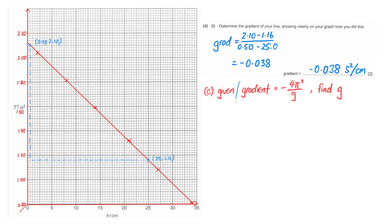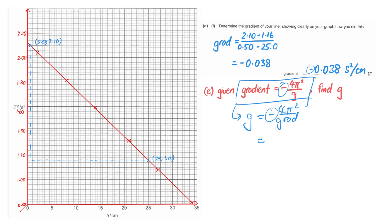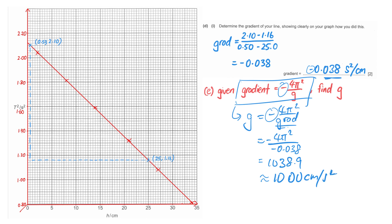Once again, an equation may be given to you — you may or may not understand it, but just follow the instructions. In this case, g equals minus 4π² over the gradient. The negative sign in the formula is there to cancel the negative sign of the gradient. You substitute in the gradient with its negative sign, −0.038, and you get approximately 1038.9, which rounds to about 1000 cm per second squared.